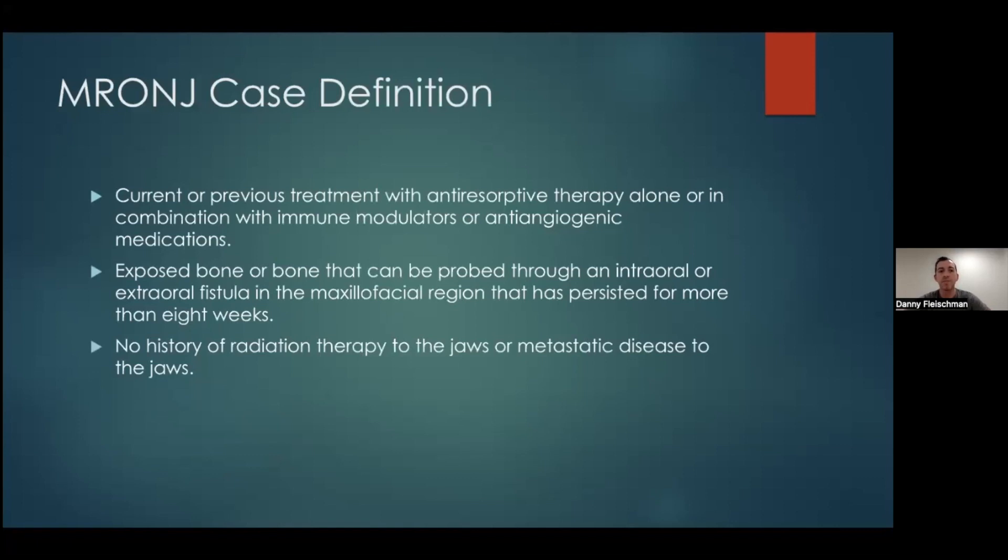Now, the first thing we need to know: what defines medication-related osteonecrosis of the jaw? So all three of these must be true for a patient to be diagnosed with medication-related osteonecrosis of the jaw. They have to have current or previous treatment with an anti-resorptive therapy alone or in combination with immune modulators or anti-angiogenic medications. There must be exposed bone or bone that can be probed through an intraoral or extraoral fistula in the maxillofacial region that has persisted for more than eight weeks. And this last part is very important: they can't have any history of radiation to their jaw or metastatic disease to their jaw. Once they have any history of radiation to the jaw, it's just osteonecrosis of the jaw from the radiation, not medication-related.